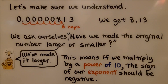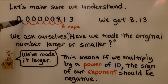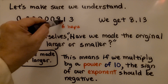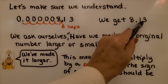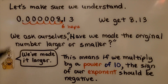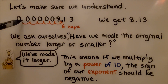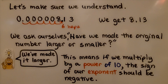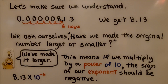Let's make sure we understand. Here we've got a zero, a decimal point, and six hops to get in between the 8 and the 1 — we're going to get 8.13. We ask ourselves: have we made this original number larger or smaller? We have 8.13, so we've made it larger. This means if we multiply by a power of 10, the sign of our exponent should be negative. In scientific notation, we'll have 8.13 times 10 raised to the negative 6th power.